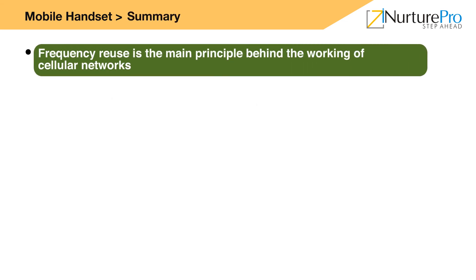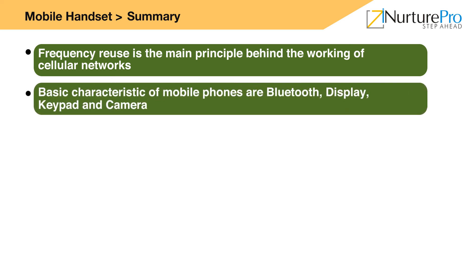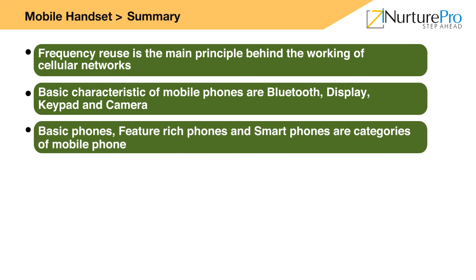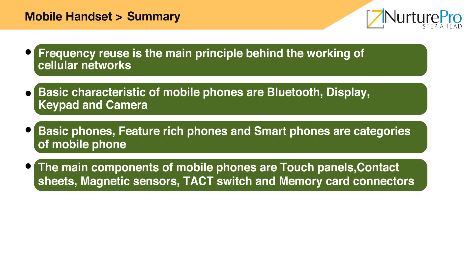Let us have a quick recap on what we discussed. Frequency reuse is the main principle behind the working of cellular networks. The basic characteristics of mobile phones are Bluetooth, display, keypad, and camera. Basic phones, feature-rich phones, and smartphones are the categories of mobile phones. The main components of mobile phones are touch panels, contact sheets, magnetic sensors, tact switches, and memory card connectors.